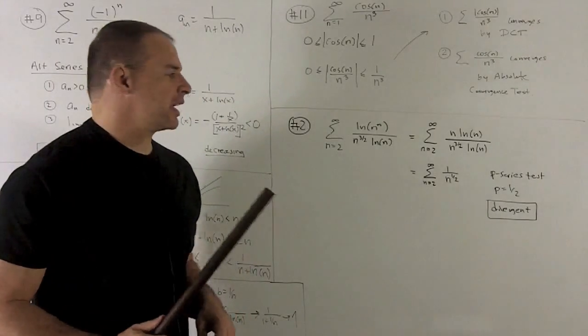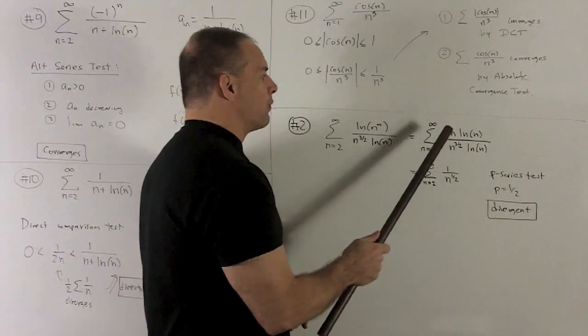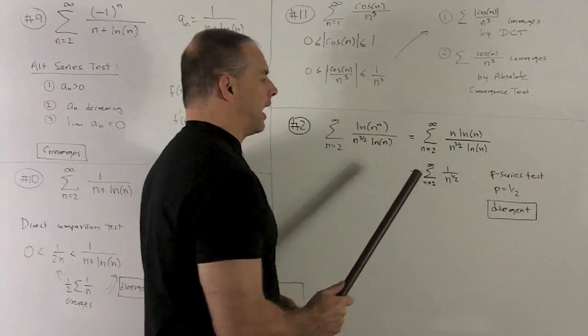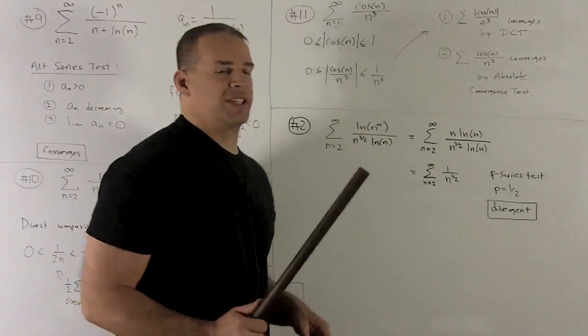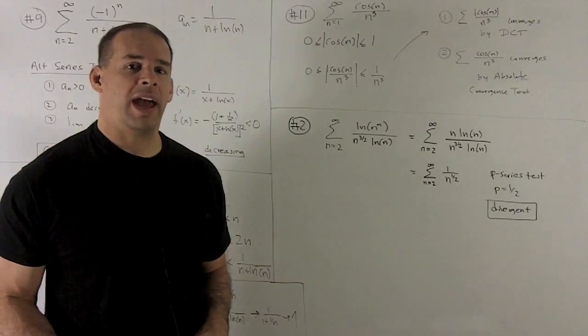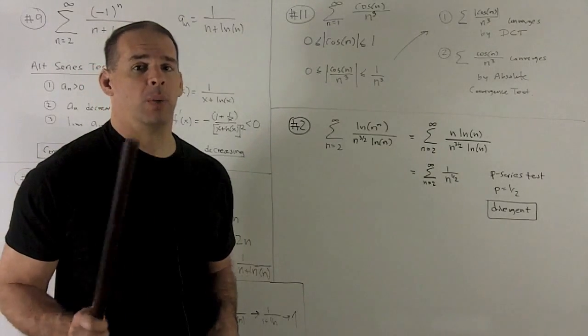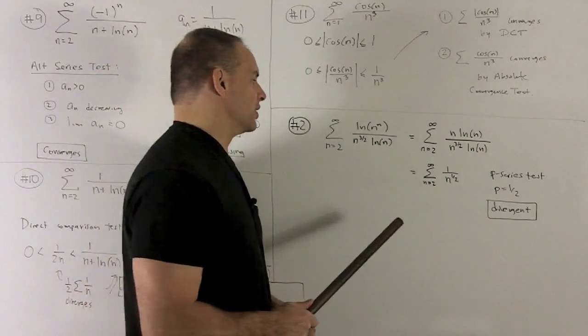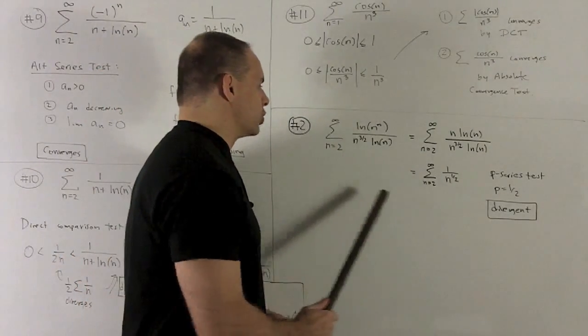Now, you notice the natural logs are going to cancel out, and then we'll have n over n to the 3 halves, which is going to simplify to 1 over n to the half. This is a p-series, so we'll look at the p-series test. Our p is equal to 1 half. We have divergence when your p is between 0 and 1 inclusive, so that means we have a divergent series here. So, this guy diverges.